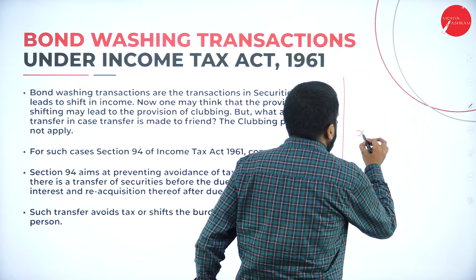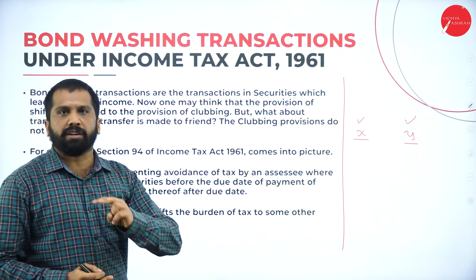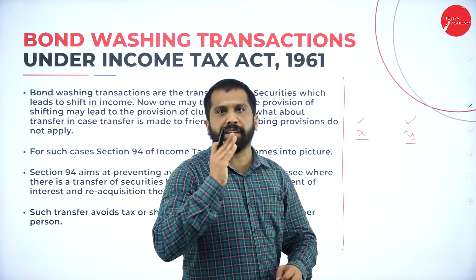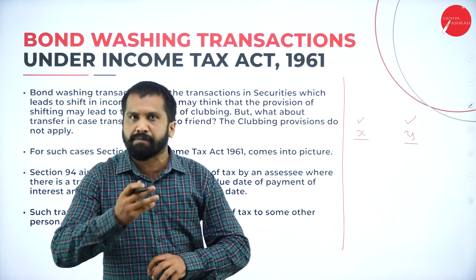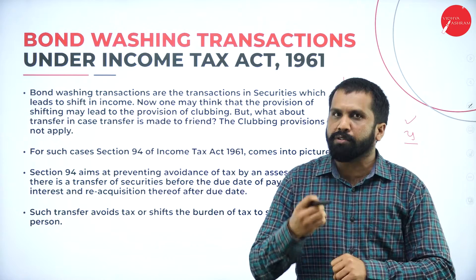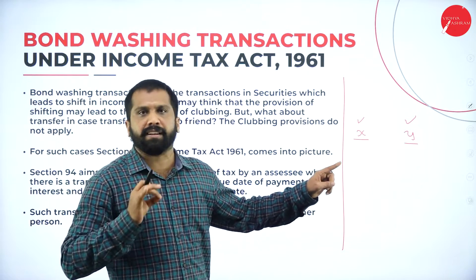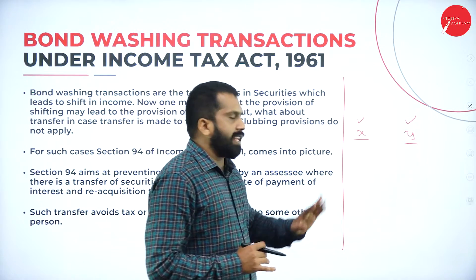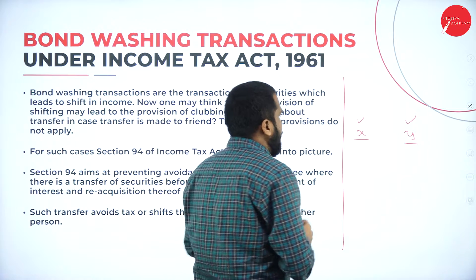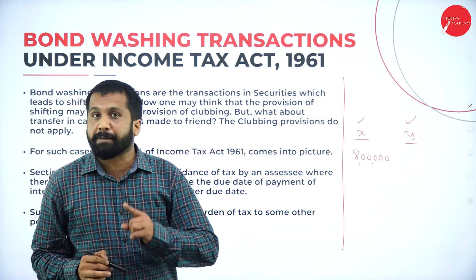Just assume that there are two persons — Mr. X and Mr. Y. X is you, and Y is your closest friend. He or she is not your family member — not your spouse, dad, mom, or brother. But he or she is your closest friend. Both completed your studies and both joined some work. Your salary is around 8 lakh per annum.